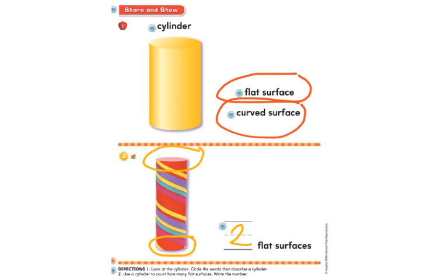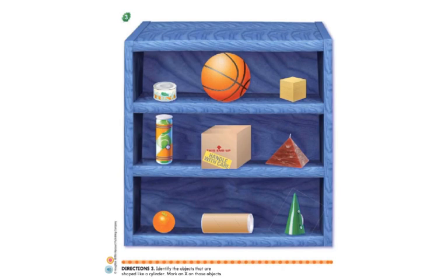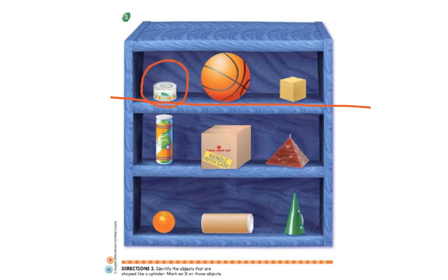Here is a bunch of real-life objects, and we are going to decide whether or not each one is a cylinder. Remember, a cylinder has two flat surfaces and a curved surface. Let's start with the top row. We have a can of tuna — is that a cylinder? Yes, it is. Is a basketball a cylinder? Nope, that's a sphere. The last object looks like a cube, and we know that's not a cylinder either.